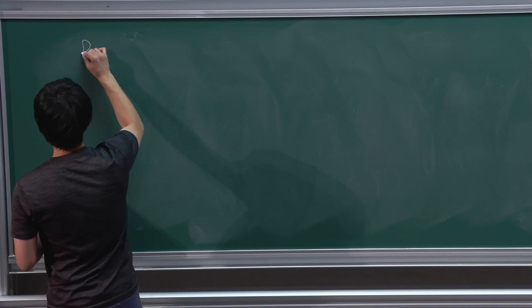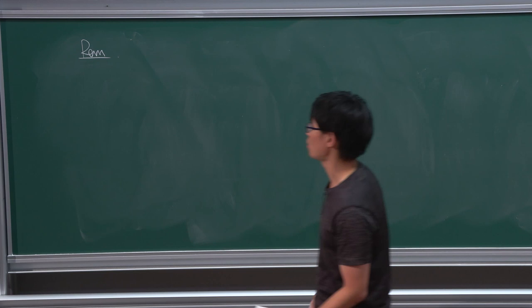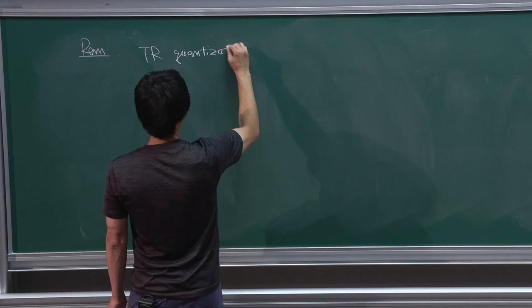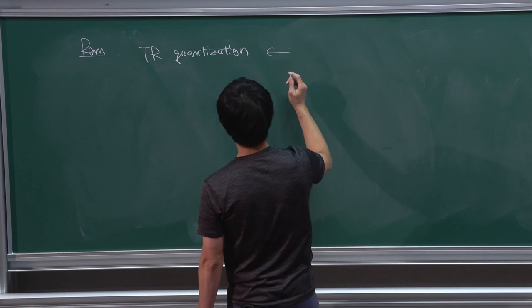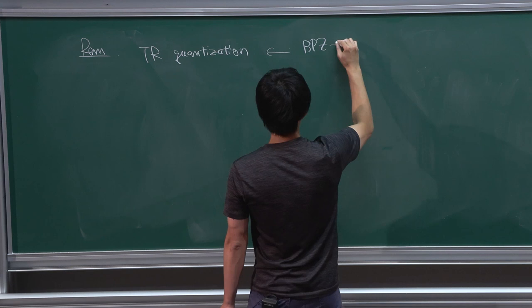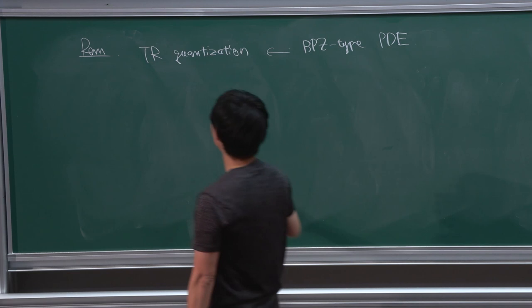I have a remark. As I said, the TR quantization is different from Nekrasov-Shatashvili quantization. TR quantization is not an ordinary differential equation — it contains infinitely many h-bar correction terms. But using some formula in topological recursion, you can describe TR quantization as a Belavin-Polyakov-Zamolodchikov-type partial differential equation. In this case, topological recursion quantization of this elliptic curve gives a partial differential equation. Applying the discrete Fourier transform gives a WKB-type solution of an isomonodromy system.